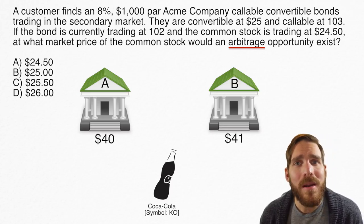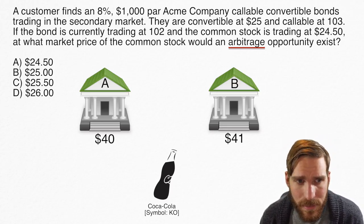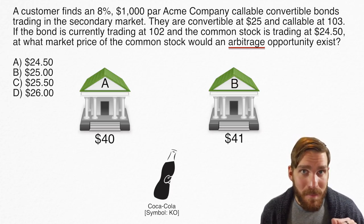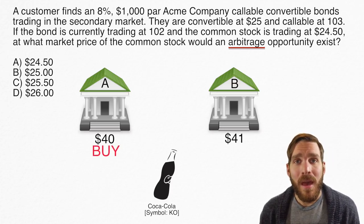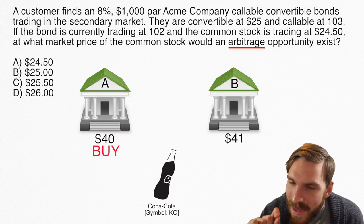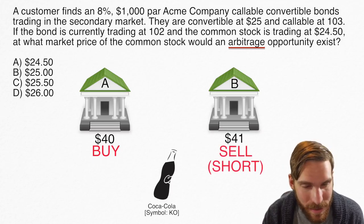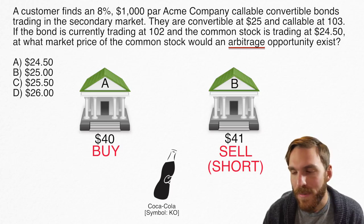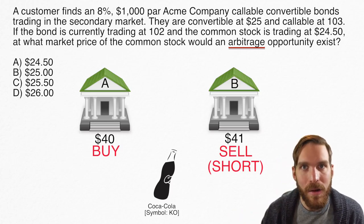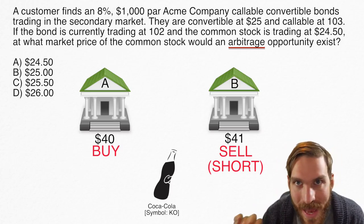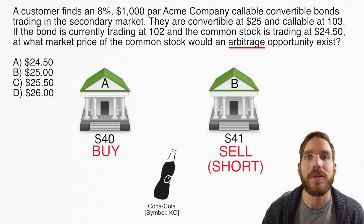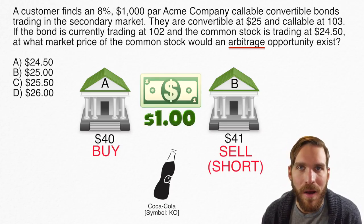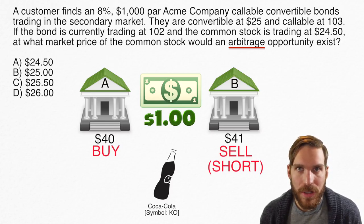If we wanted to make a profit off of this, we'd go to Exchange A and buy shares there, then instantaneously sell — technically short sell — shares in Exchange B. Every time we do that, we make a $1 profit. That's arbitrage: a quick, instantaneous way of making a profit.